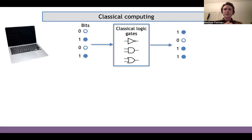Let me give a brief introduction to quantum computing. Classical computing involves sets of bits, which are states of zeros and ones. Classical computers act on these sets of bits using classical logical gates such as NOT, AND, and OR, and translate them into new sets of bits. This is how our computers do all of their computations.